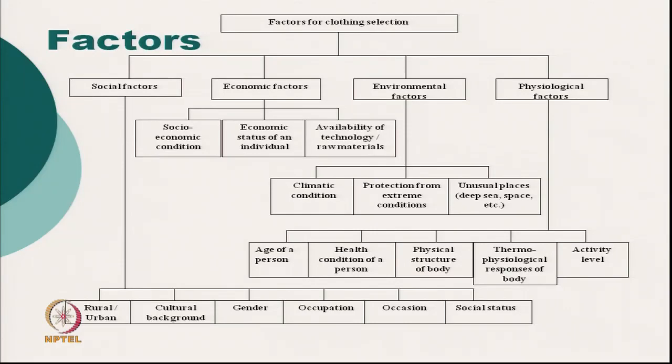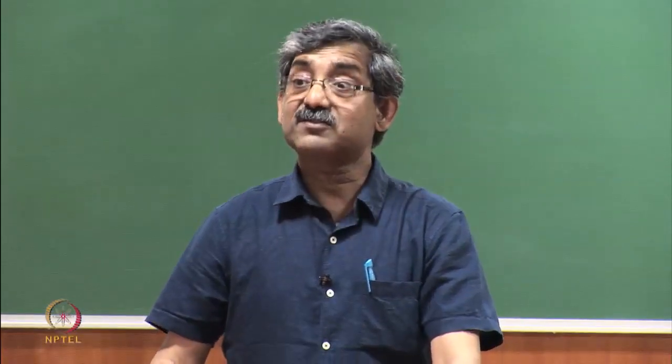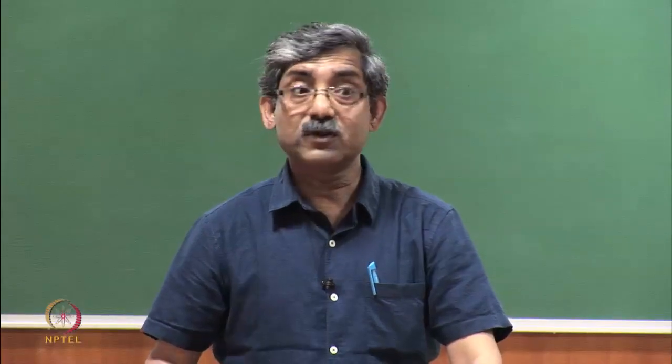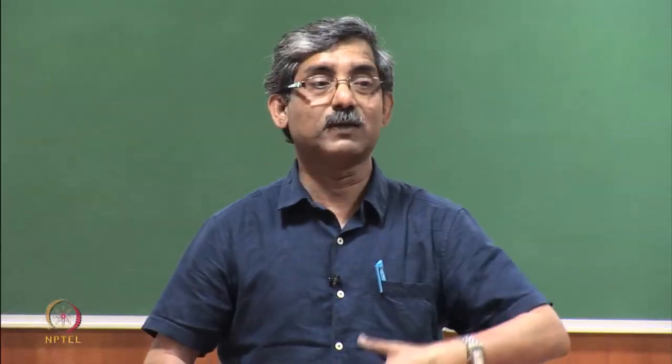Physiological factors of a particular person are subdivided into 5 subgroups: age, health condition, physical structure, thermophysiological response, and level of activity. At different ages, people's physiological conditions are different so they need different clothing. Physical structure — whether tall or short — also affects selection. Thermophysiological response varies person to person; my metabolic condition controls my clothing selection. At different levels of activity, you need different types of clothing.